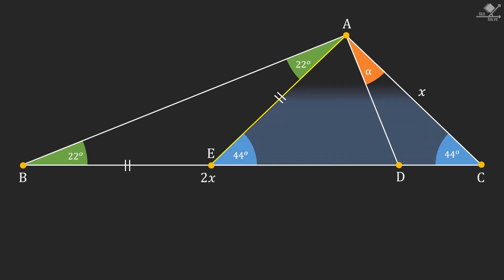Focus on this shaded triangle. As you can see, this is also an isosceles triangle with 44-degree base angles. So, its corresponding sides must be equal.